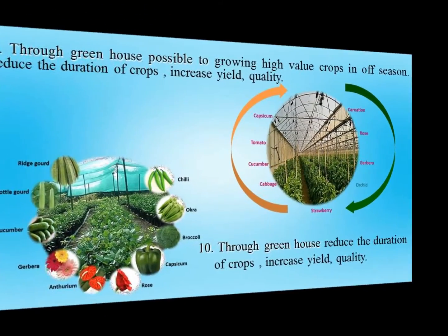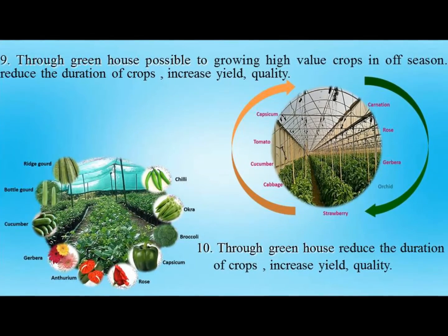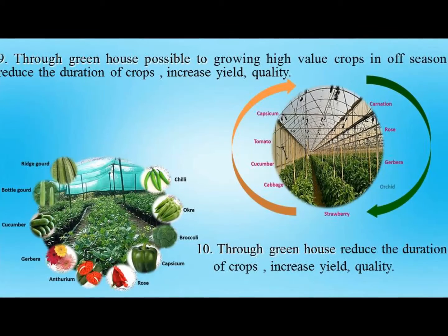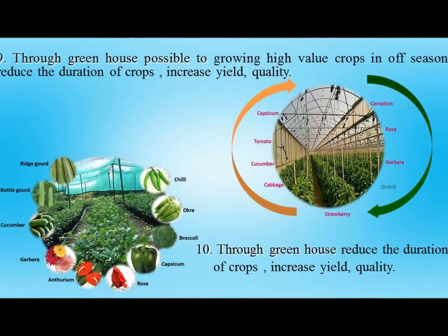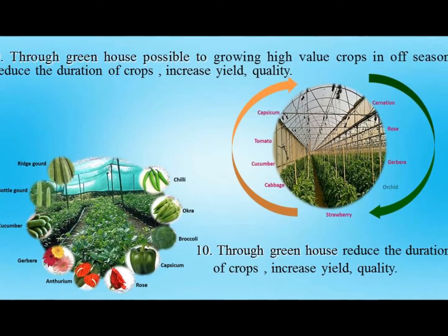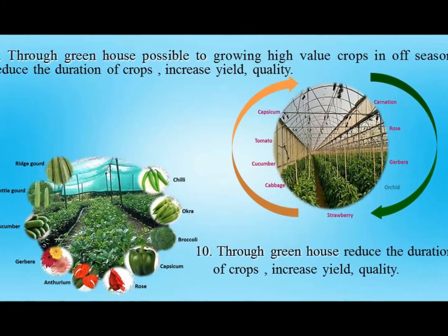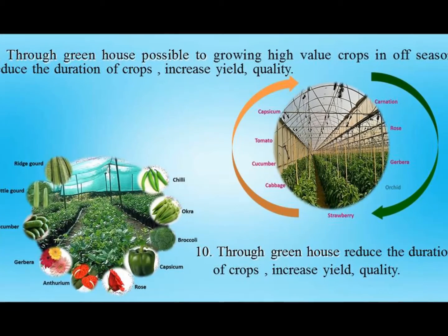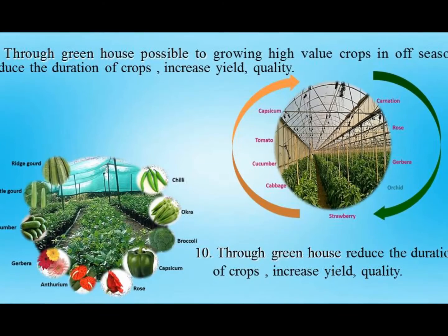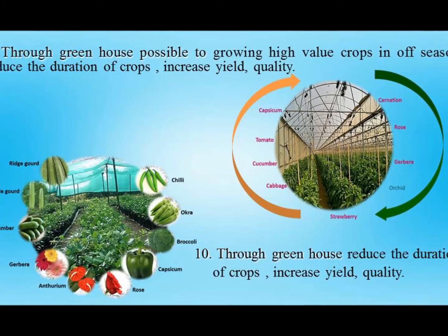Through greenhouse, it is possible to take a crop throughout the year, and also possible to grow crops in off season. In Poly House, plants grow under controlled climatic conditions, so there are less chances of loss or damage of crops. It is possible to grow crops throughout the year without waiting for any particular season, so that smart farmers can produce high value crops out of their normal season and get higher income and higher returns.